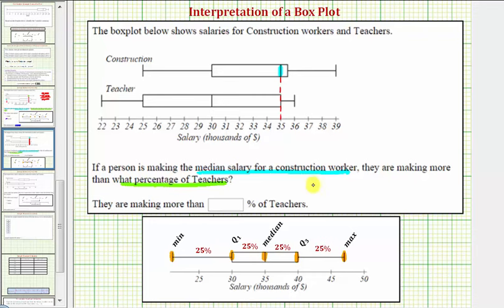But notice how this value is also the third quartile for teachers. And because this is the third quartile for teachers, we know twenty-five percent of the data is going to be in the interval from the third quartile to the maximum, which means seventy-five percent of the data would be between the minimum and the third quartile. Twenty-five percent here, twenty-five percent here, and twenty-five percent here.